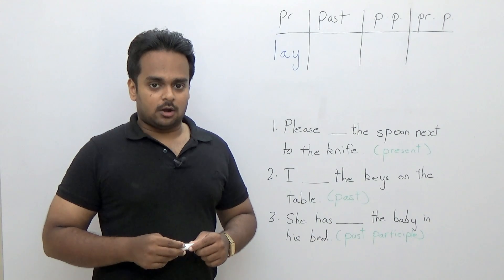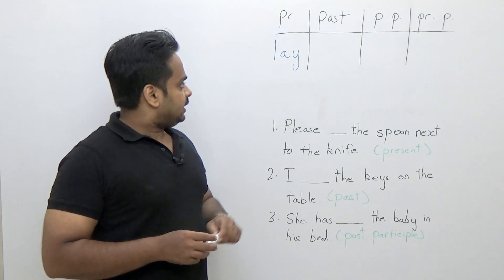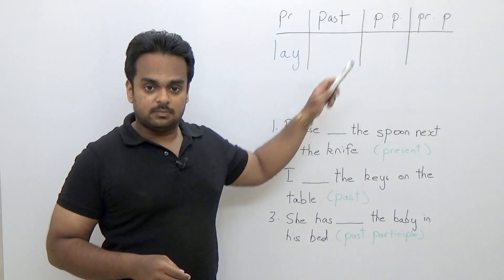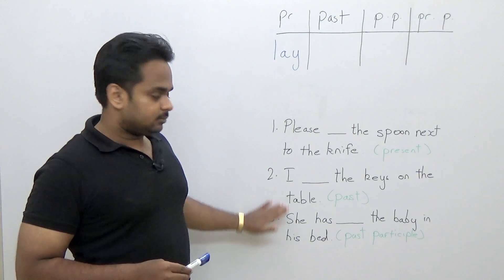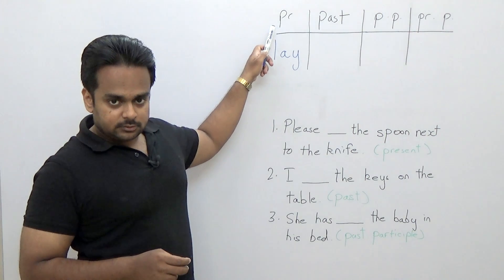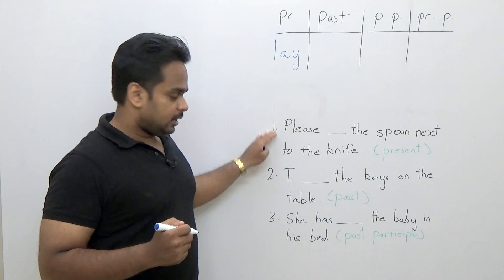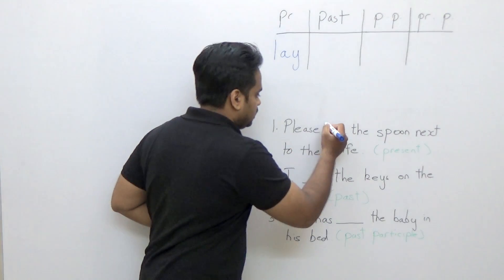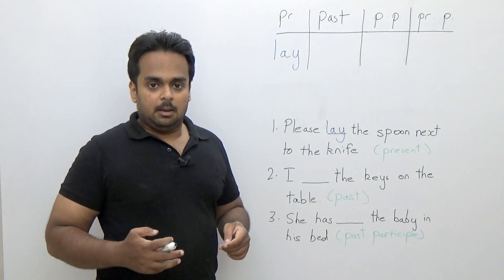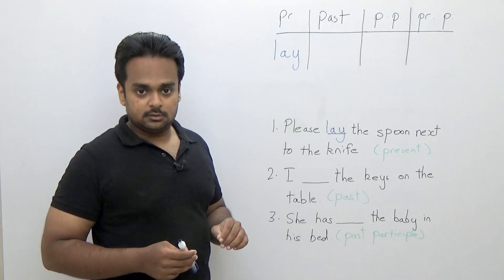Now we're going to talk about the more confusing part — and we're going to make it less confusing. Here I've got the word 'lay' and we're going to talk about its different verb forms, with some examples to help you understand. The present tense of the verb 'lay' is simply 'lay'. For example: 'Please lay the spoon next to the knife' — meaning please take the spoon and put it gently next to the knife.